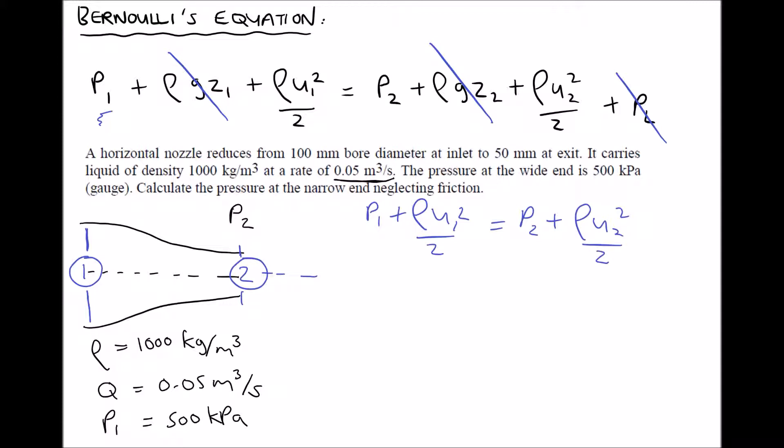Now what the question is asking us to find this time is P₂. So the way that we get P₂ on its own is by subtracting ρu₂²/2 from each side. I'm going to switch the left and right-hand sides as well, so we get P₂ = P₁ + ρu₁²/2 - ρu₂²/2. So we're trying to find P₂, P₁ is given, we need to determine u₁ and u₂ from our volume flow rate.